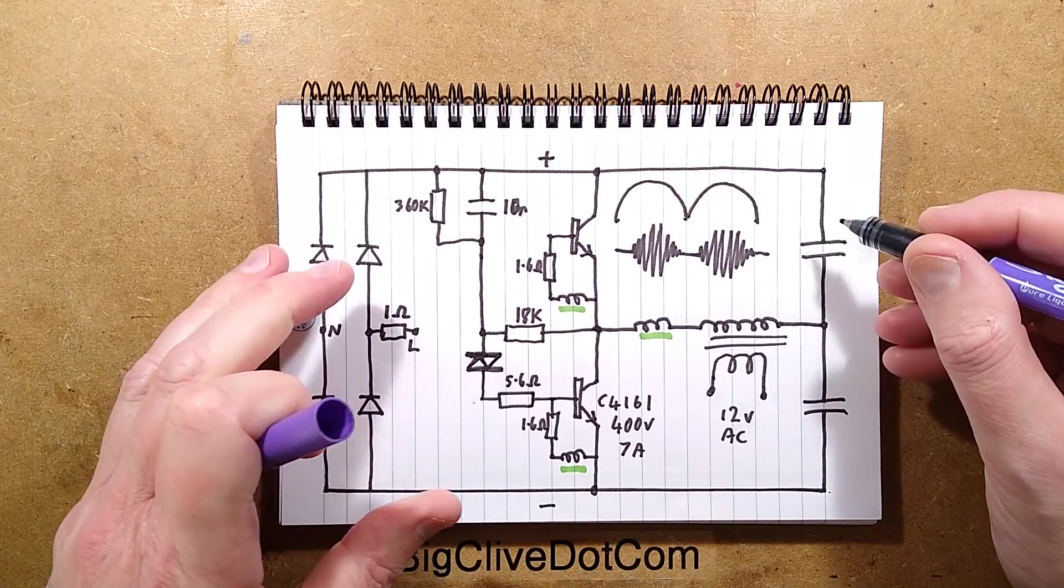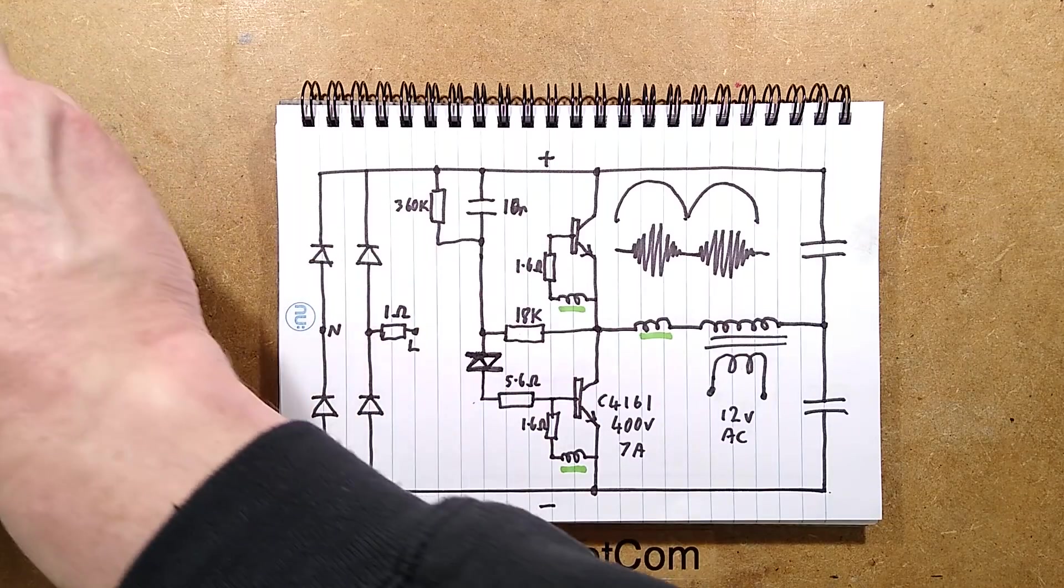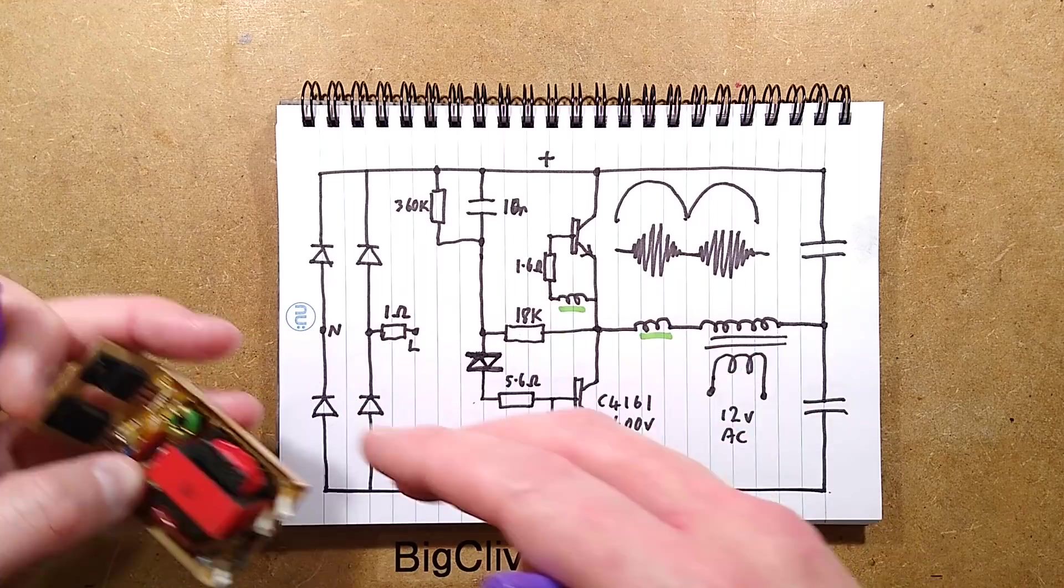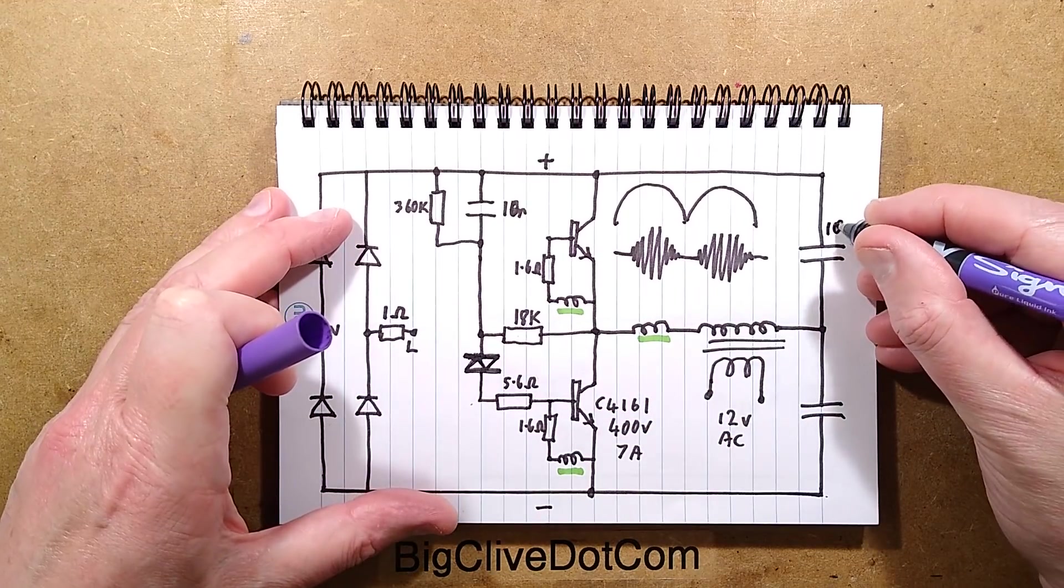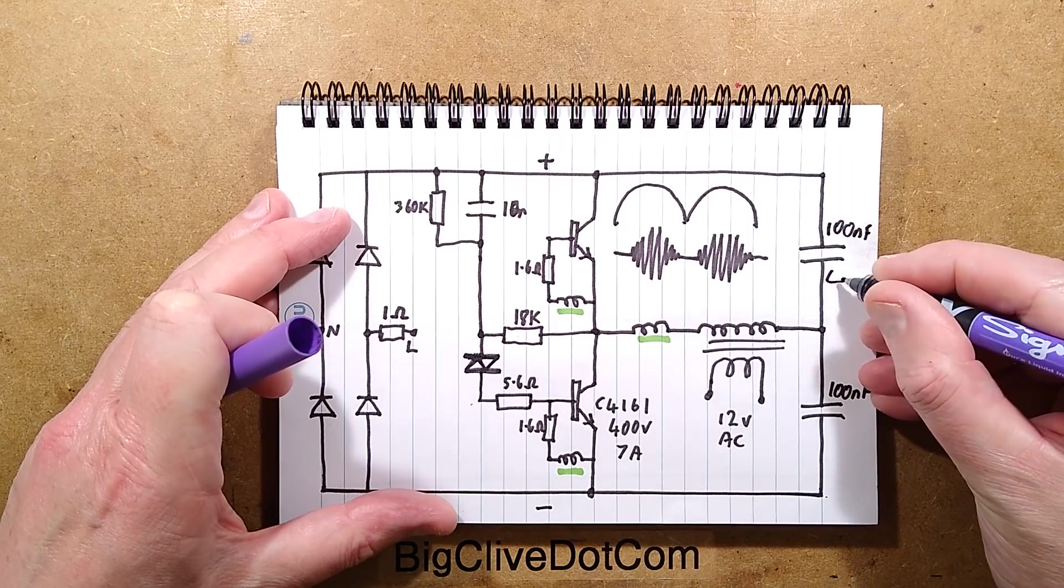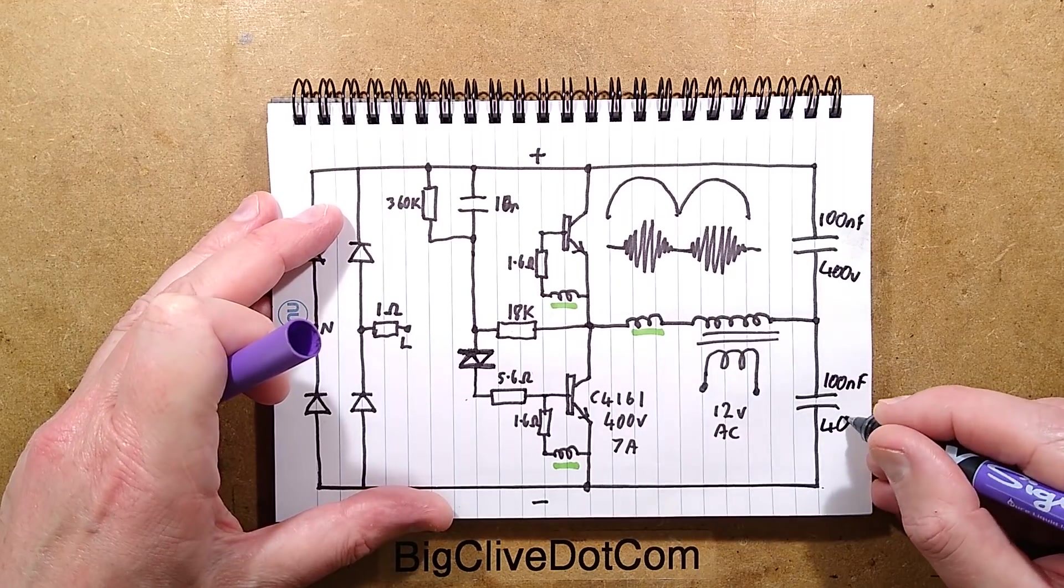Grubby fingerprints from handling a transformer earlier. I should actually write the value of these in. Let me just remind myself the value of those by looking at them. 104, that's 100 nanofarad, 100 nanofarad, 400 volt. I'll write that in.